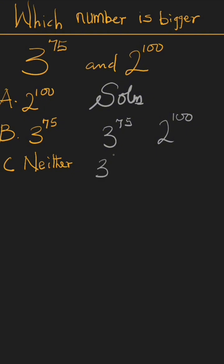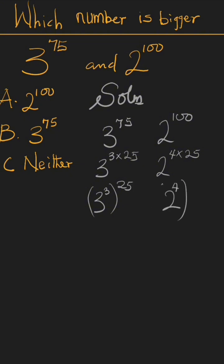We can rewrite 3 raised to the power of 75 as 3 raised to the power of 3 times 25, and 2 raised to the power of 100 as 2 raised to the power of 4 times 25. This gives us (3^3)^25 and (2^4)^25.